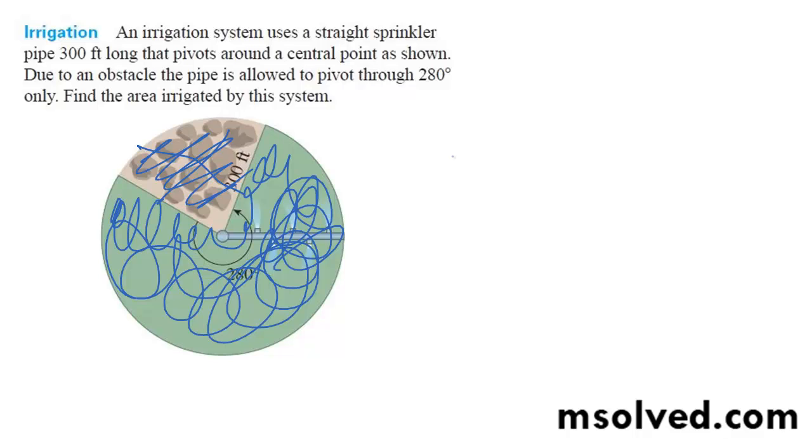So to do that, the area of the entire circle is one half pi r squared.